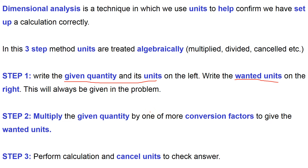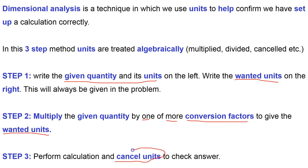We set up conversion factors, which are fractions, to take us from the given quantity with its units into the wanted unit. We multiply by one or more conversion factors until we arrive at the units that we want. Then we cancel our units to make sure everything is set up correctly, and finally enter the numbers into our calculator to get the correct number.